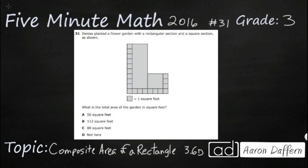Hello, and welcome to 5-Minute Math. Today we are looking at the third grade concept of finding the composite area of a rectangle. This is standard 3.6D in the great state of Texas, and we are using item number 31 off the 2016 released STAAR test.